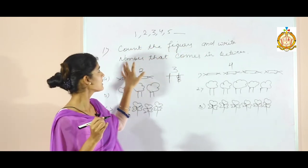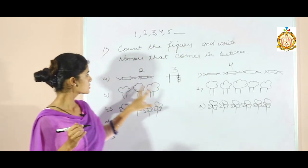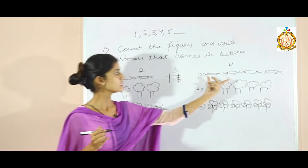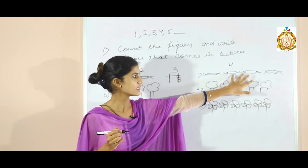Count the figures and write the number that comes in between. So, firstly count the figures of this side. 2. 2 candies are there. And this side. 1, 2, 3, 4. 4 candies are here.